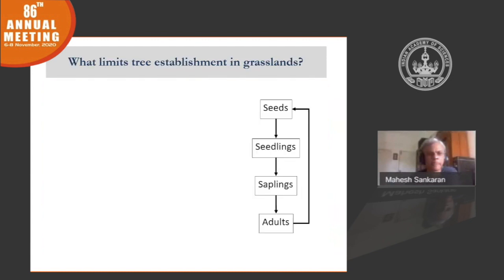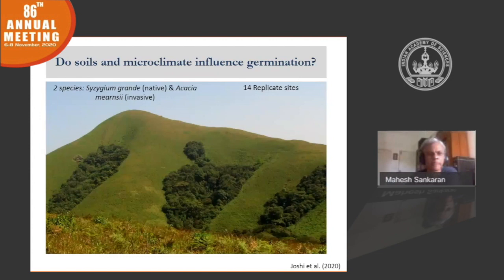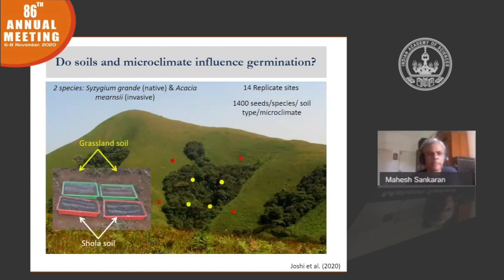So the question is: what limits tree establishment in grasslands? We can think of this as a demographic cycle — seeds need to transition to seedlings, establish and become saplings, and grow to adults. The first question we asked was: do soil and microclimate influence germination? We carried out a factorial experiment with two species — a native and an invasive — with 14 replicate sites, two different soil treatments using soil from the grasslands and from the shola, and we germinated seeds placed in either the grassland microclimate or within the forest patch microclimate.